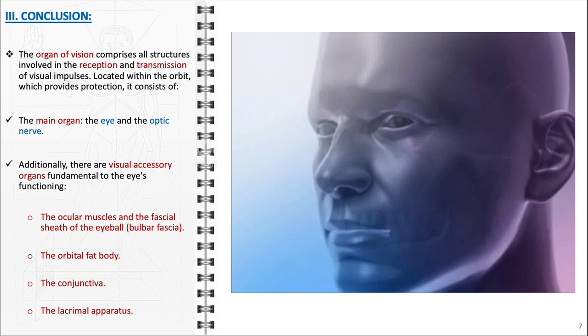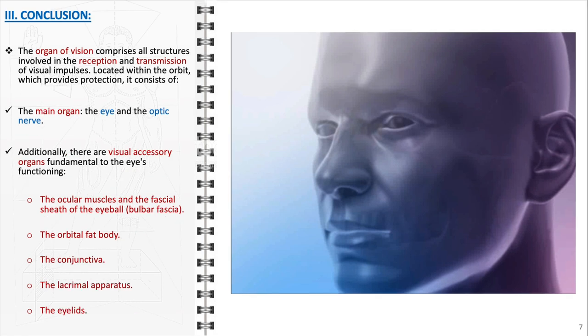The lacrimal apparatus, comprising the lacrimal glands and associated ducts, is essential for producing and draining tears. And the eyelids, they act as protective covers for the eye, shielding it from external irritants and injury. Each component plays a unique and indispensable role in the process of vision, working in concert to enable us to perceive and interact with our surroundings effectively.